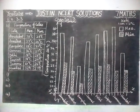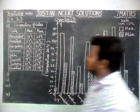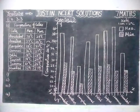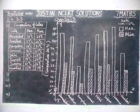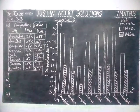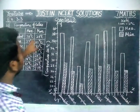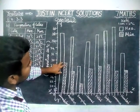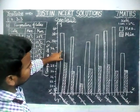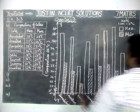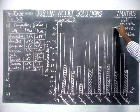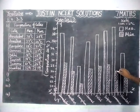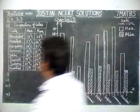We have completed the bar graph. Now we will answer the questions using it. The first question is: which city has the largest difference in minimum and maximum temperature? From the bar graph, Jammu has the highest difference — maximum is 41°C and minimum is 26°C. So the maximum difference is in Jammu.